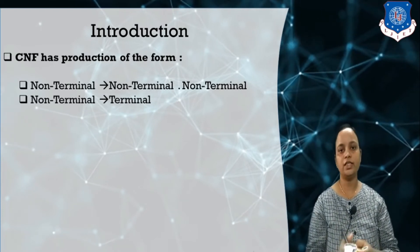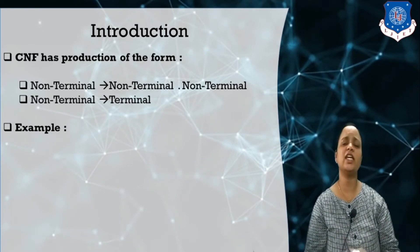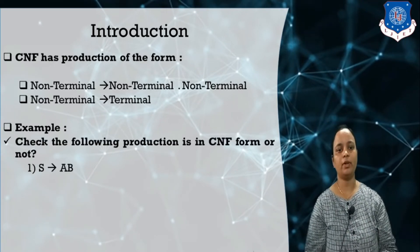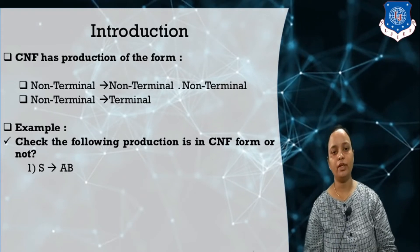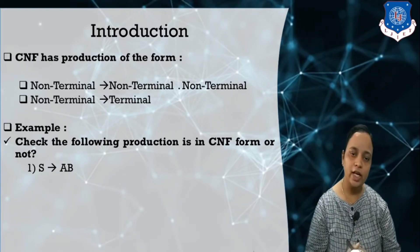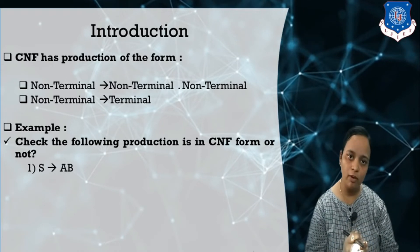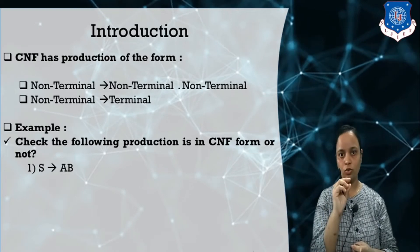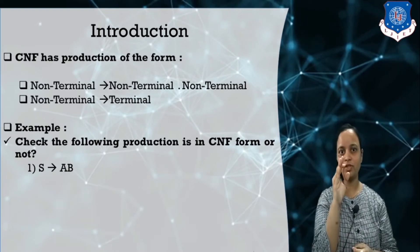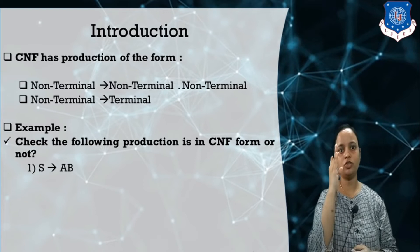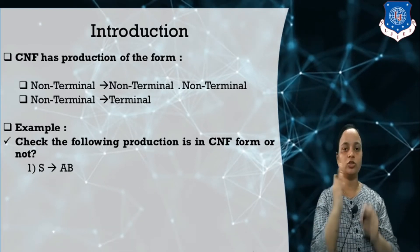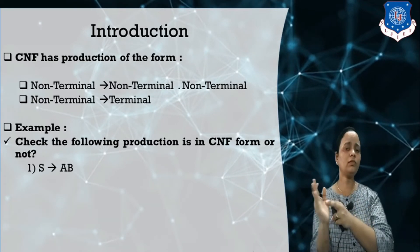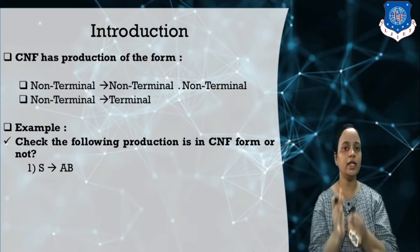Now let us check if the following production is in CNF form or not. The first example: S derives capital A capital B. Can we say this production is in CNF form? There are two forms available. The first form says exactly two non-terminals on the right-hand side. Checking this example, it contains two non-terminals, so it is in CNF form.